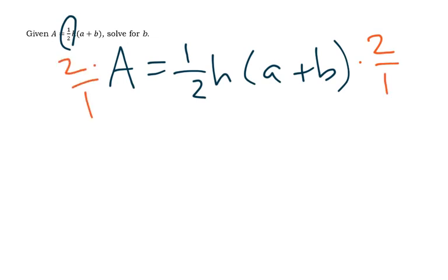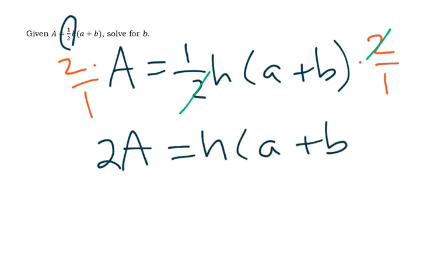On both sides, and by doing that it gets rid of that denominator 2, so I'm left with 2A = h(a + b). Remember, our goal is to get this b by itself, and that b is inside parentheses, so I want to get rid of stuff that's surrounding it first.